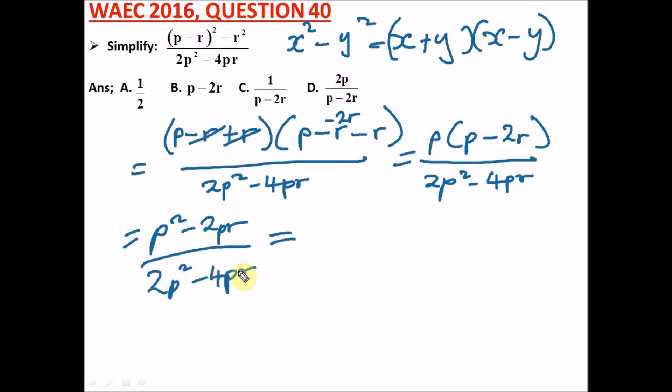So this will be equal to what? We can simplify the denominator by bringing out 2. So we have in the numerator p squared minus 2pr divided by, bringing out 2, we're left with 2 times p squared minus 2pr.